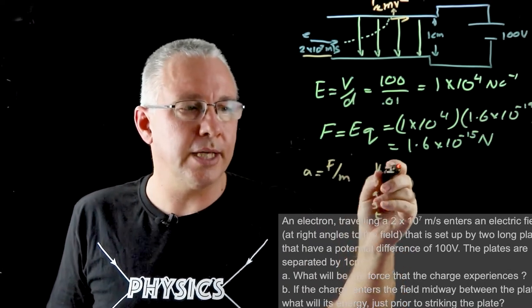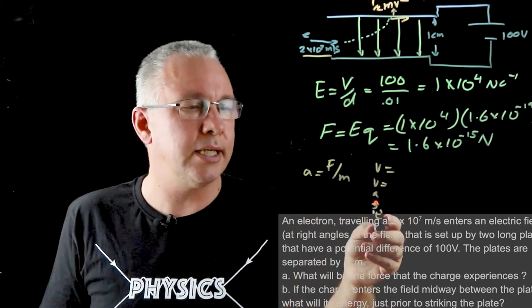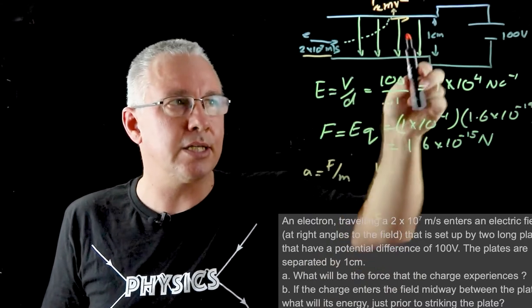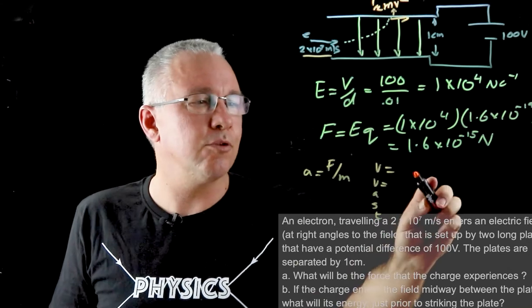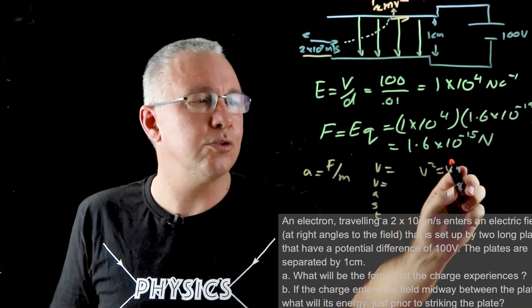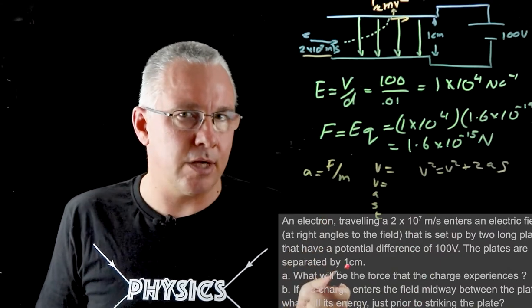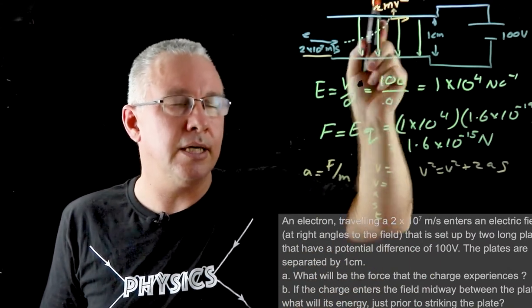You've got this velocity to work out, the initial velocity is zero, the acceleration is the acceleration just worked out here. Now the displacement is halfway between so it's not one centimeter, it's going to be only half of that, and we're not interested in the time because the formula you'll need is v squared is equal to u squared plus 2as. That will allow you to work out the velocity.